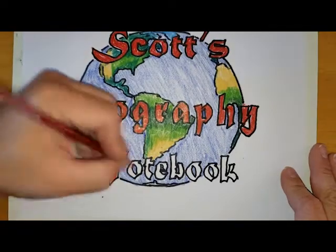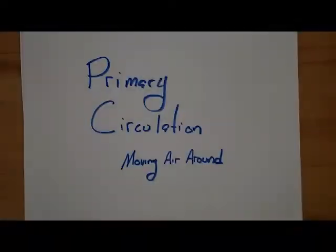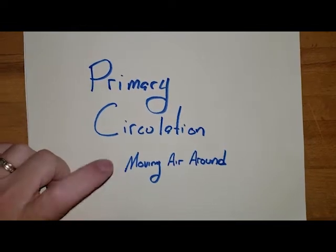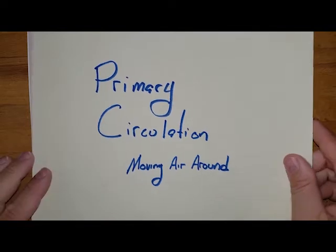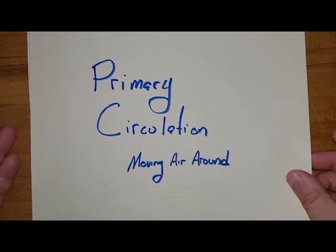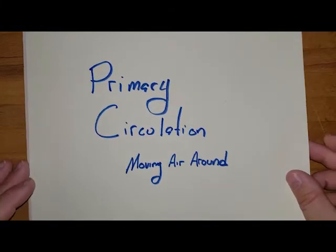Scott's Geography Notebook. We're going to learn about something called primary circulation — really it's just moving the air around. In this video we're going to talk about some of the basics of what makes air move from one place to another, so basically what makes wind. In future videos we'll see how it works on a global and regional scale, but here we're just talking about the building blocks.